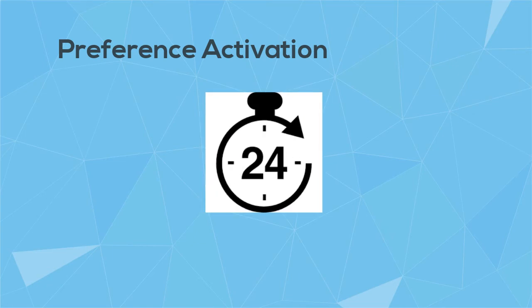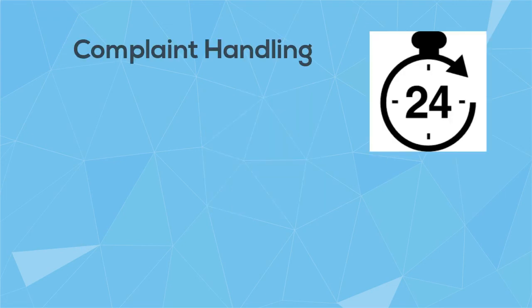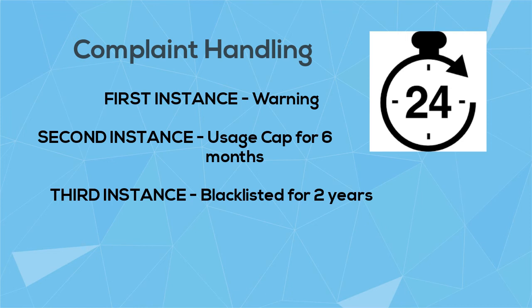Preferences recorded or modified by the subscriber should be given effect in real time, and the subscriber should not be receiving such communications after 24 hours of registering their preferences. If an advertiser continues with such communications, the access provider issues a warning in the first instance, imposes a usage cap for six months in the second instance, and in the third instance, the advertiser is blacklisted for two years.